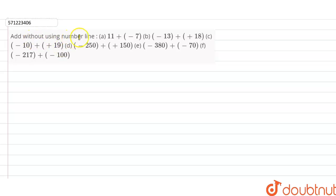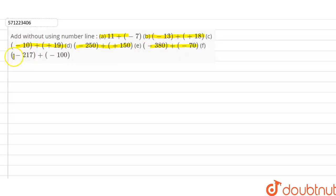Hi students, the question is: add without using number line. The parts include expressions such as 11 + (–7), –13 + (+18), –10 + (+19), –250 + (+150), –380 + (–70), and –217 + (–100).